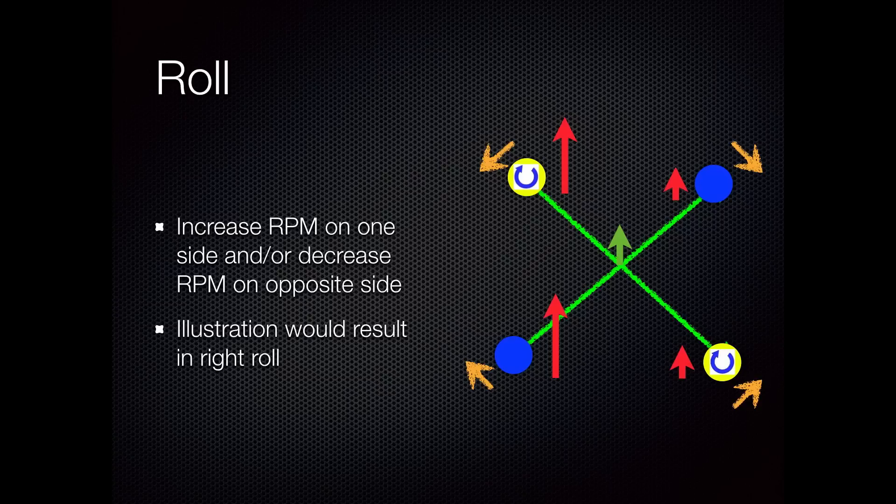You have to remember that since it's a quad rotor, even though the nose is still pointing in the direction of the green arrow, as it rolls to the right, this quad rotor is going to move to the right as well. Just the opposite of this illustration would give you a roll to the left.